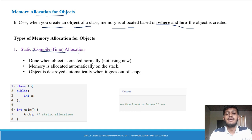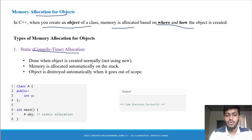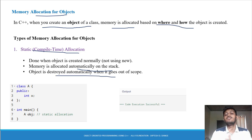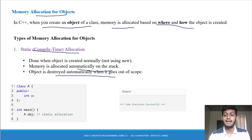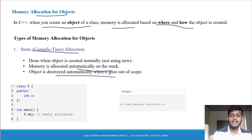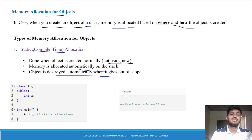Static allocation is done when objects are created normally. जब objects normally create करते हैं तो static allocation होता है. Memory is allocated automatically on the stack. Object is destroyed automatically when it goes out of scope. तो यहाँ पर destroy भी automatically होती है, allocated भी automatically होती है. Dynamically मतलब आपको new keyword को use करना पड़ेगा और delete keyword से memory delete करनी पड़ेगी — वो dynamic allocation में आता है.